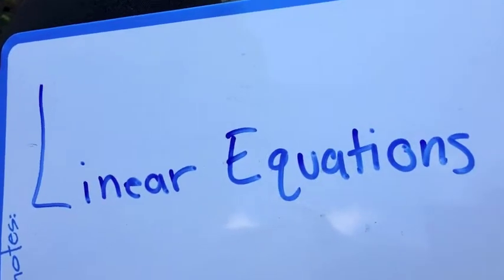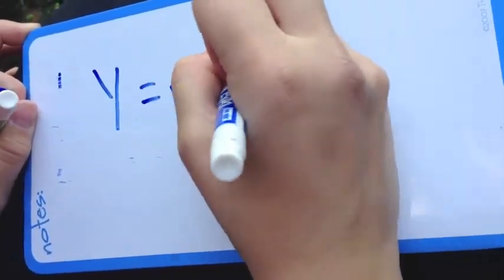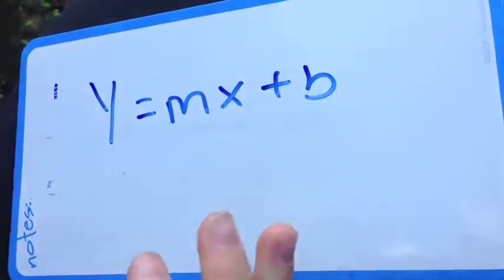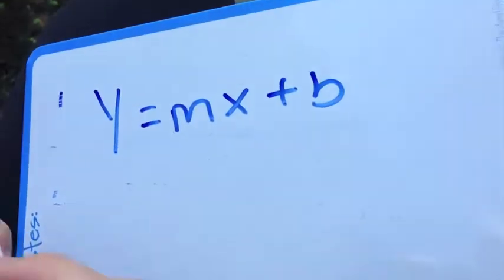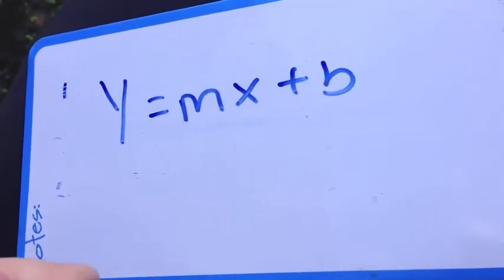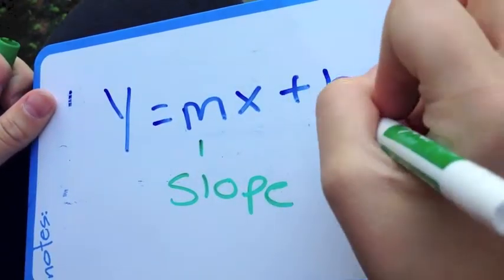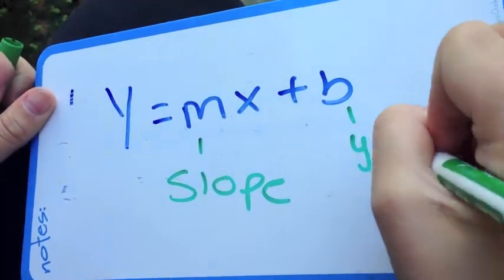I'm going to teach you linear equations. What's that? Well, when you have a problem, it all comes back to y equals mx plus b. This is the most important thing you'll need for math. What do the letters stand for? Well, m stands for slope and b stands for y-intercept.